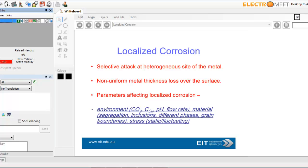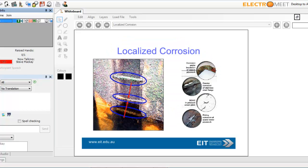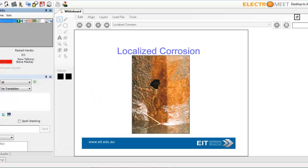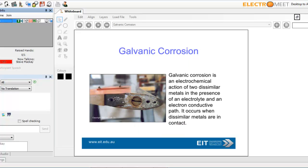Localized corrosion - attack at a heterogeneous site. Parameters affecting localized corrosion are carbon dioxide, pH, ferrate, material, stresses, strains, type of material, level of carbon in the material. Here's localized corrosion, particularly bad one here.